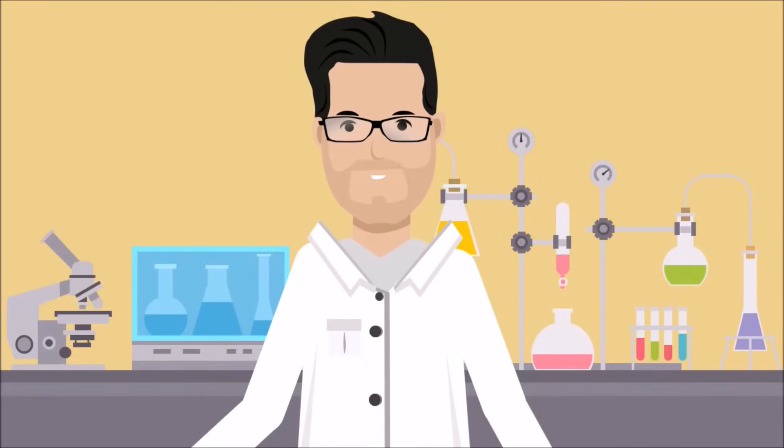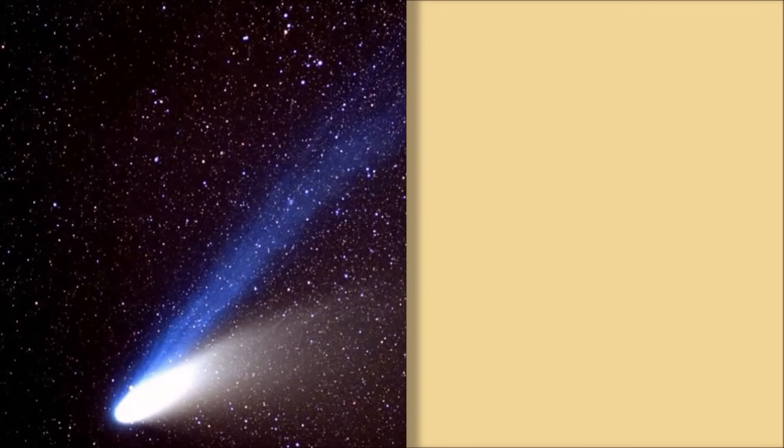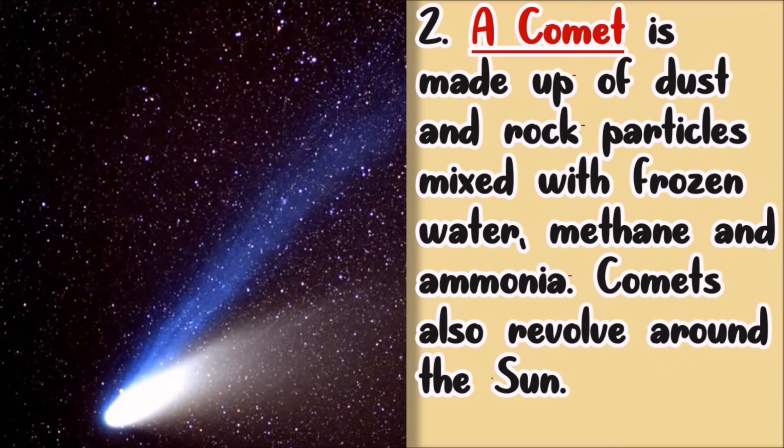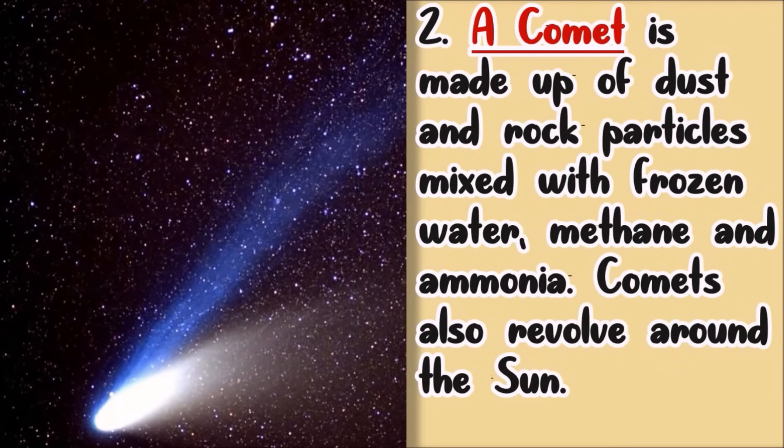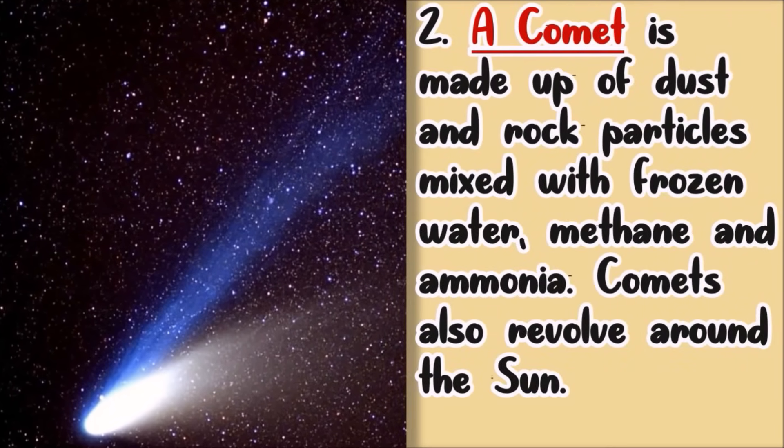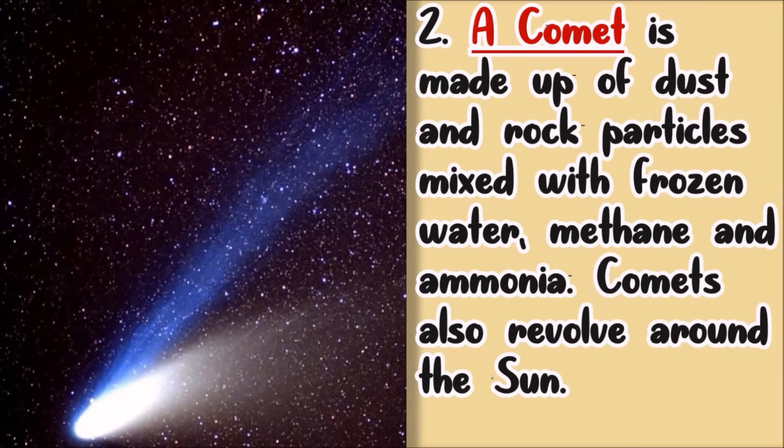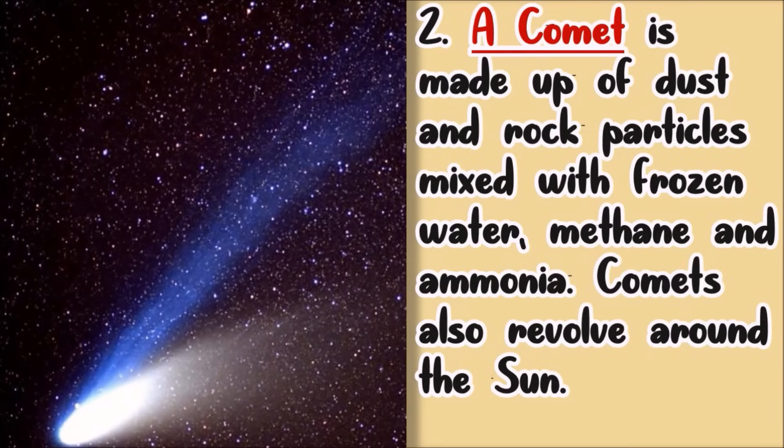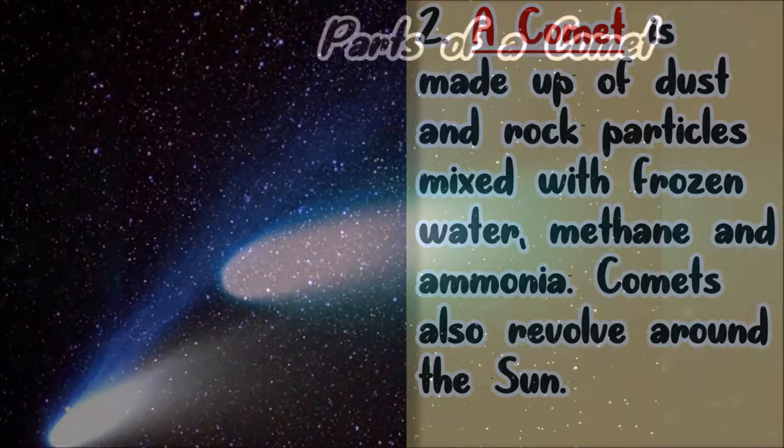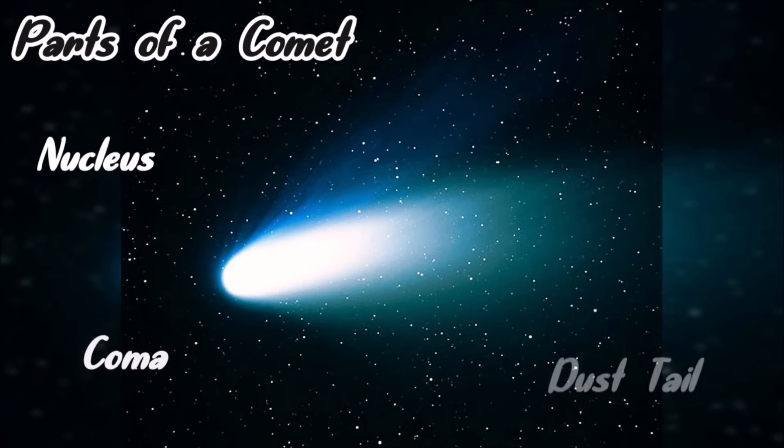What are comets? Comets are made up of dust and rock particles mixed with frozen water, methane, and ammonia. It actually looks like this in space. And here are the parts of the comets.